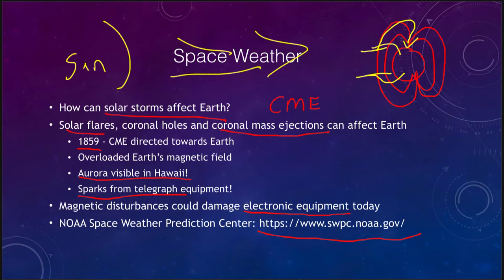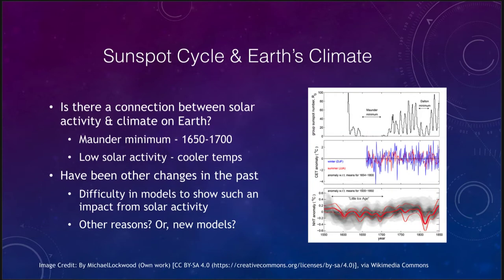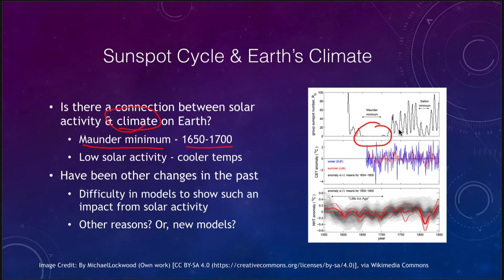Finally, let's look at how solar activity can possibly affect the Earth's climate. Is there a connection between solar activity and the climate here on Earth? We know the Maunder Minimum, which occurred in the late 1600s, led to a time of unusually cool weather on the Earth — much less heat because of this minimum. There was less solar activity going on and less heat energy being generated by the sun. So a low amount of solar activity means cooler temperatures.